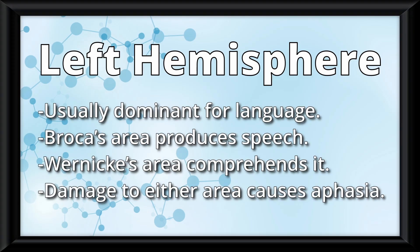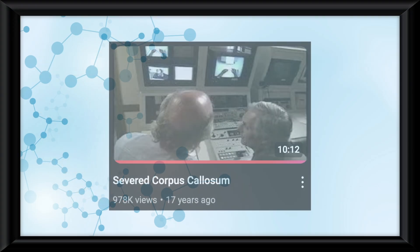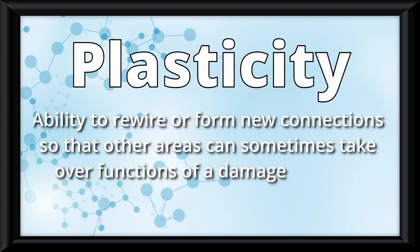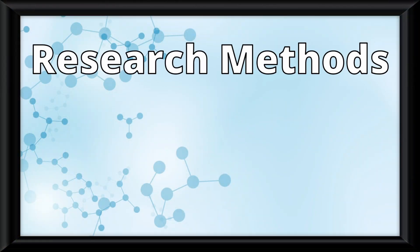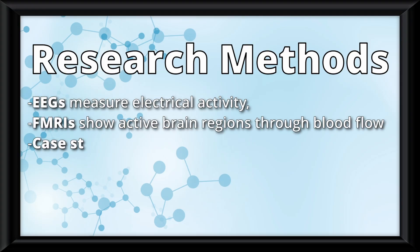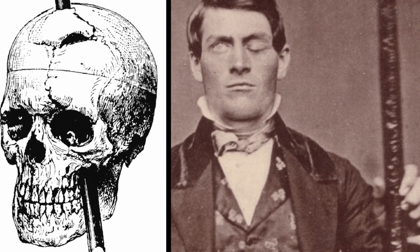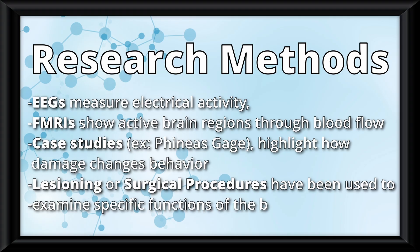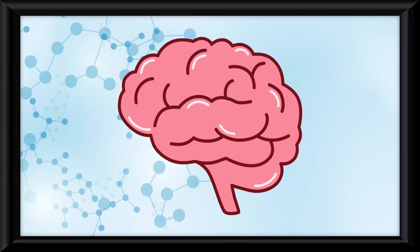Damage to either Broca's or Wernicke's area causes something known as aphasia. The way researchers found this out is very interesting — link in description. The brain also does something called plasticity, which is the ability to rewire or form new connections so that other areas can sometimes take over functions of a damaged region, especially early in life. How do we know all of this? Through different research methods: EEGs measure electrical activity; fMRIs show active brain regions through blood flow; case studies like Phineas Gage highlight how damage changes behavior; and lesioning or surgical procedures have been used to examine specific brain functions.